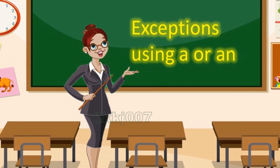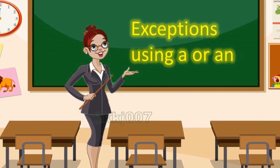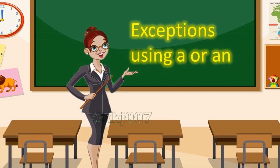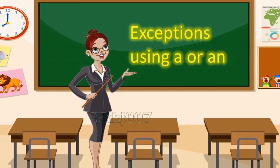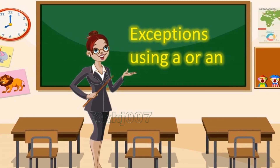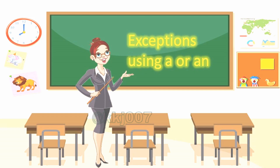Consider the examples below. It is incorrect to say: please give me a water. Water is an uncountable noun and should not be used with the indefinite article. The correct way to say is: please give me some water. If you describe the water in terms of a countable unit, like a bottle, you can use the indefinite article to modify the unit: please give me a bottle of water. It is incorrect to say: please give me an ice. The correct ways to say are: please give me an ice cube, or please give me some ice.